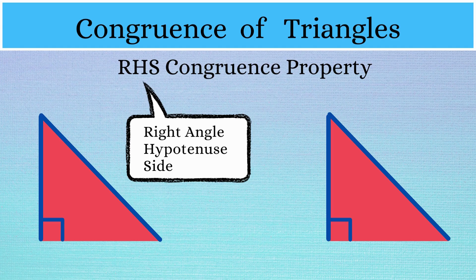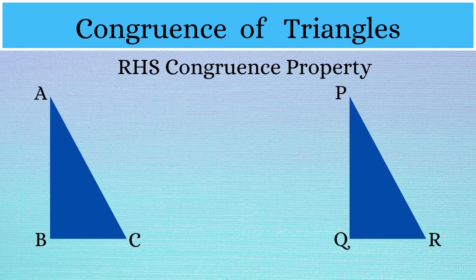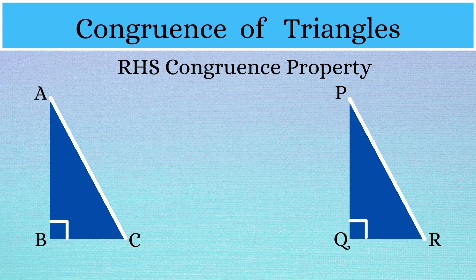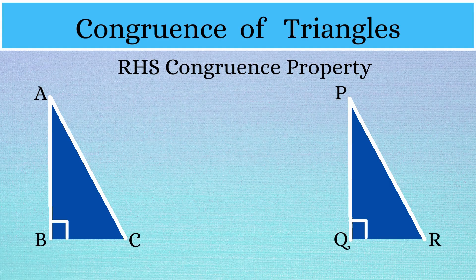Let us check that out with our example. In the given two triangles, angle B of the first triangle and angle Q of the second triangle are right angles. The hypotenuse AC of the first triangle is equal in length to the hypotenuse PR of the second triangle. And side AB is equal to side PQ. This makes both triangles ABC and PQR congruent to each other.